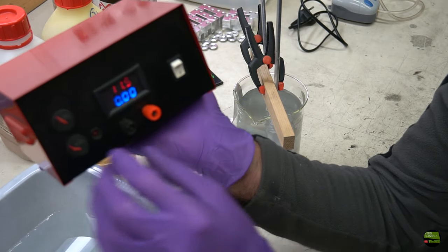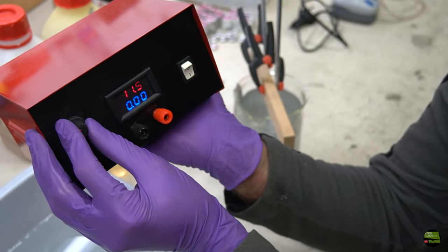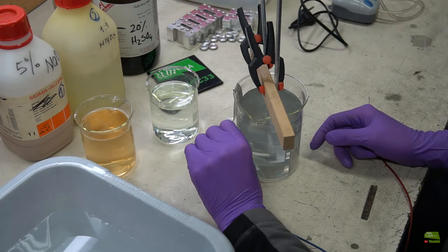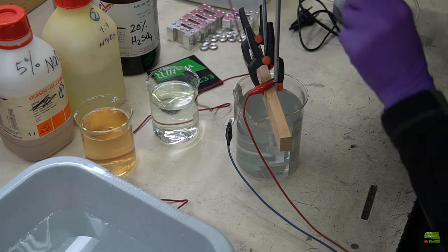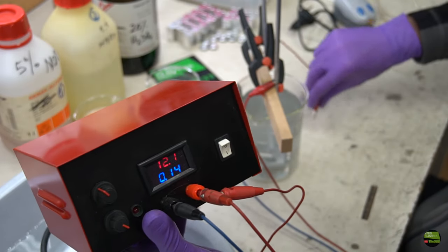Now plug in the power supply and set the voltage to about 12V. Negative wire connects to cathode and positive to anode. I anodized two parts at once, so I used two positive wires, each connected to one rod.